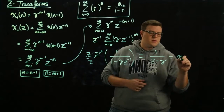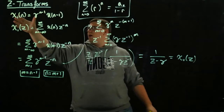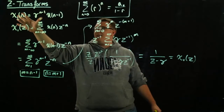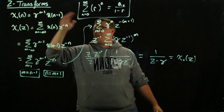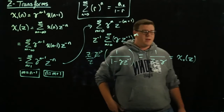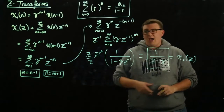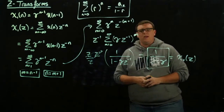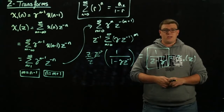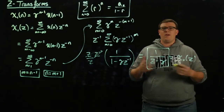Multiplying by z over z gives a cancellation, and we finally get 1 over z minus gamma. This is the closed form solution for the Z-transform of gamma to the n minus 1 times u(n minus 1), much easier to work with than the infinite summation. The next example will be a cosine function.